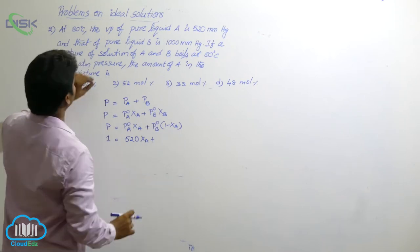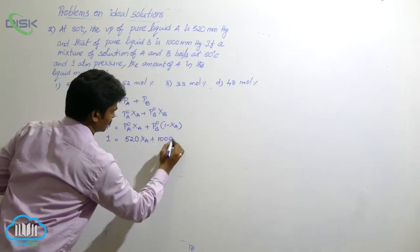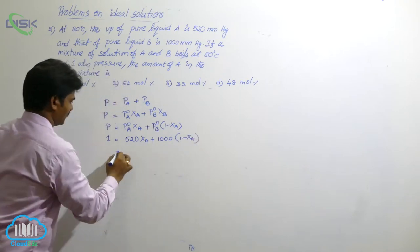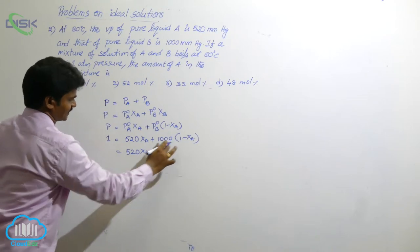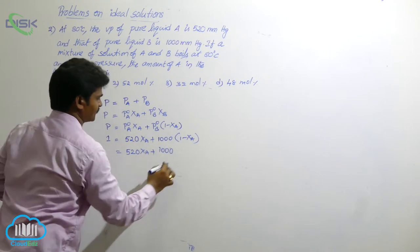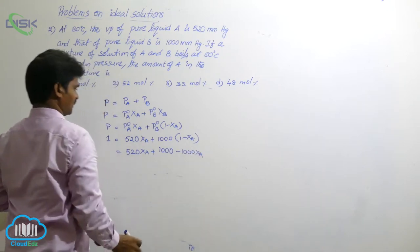What is p0B? It is also given. p0B is 1000. So, 1000 into 1 minus xA. Now, expand: 520 xA plus 1000 minus 1000 xA.